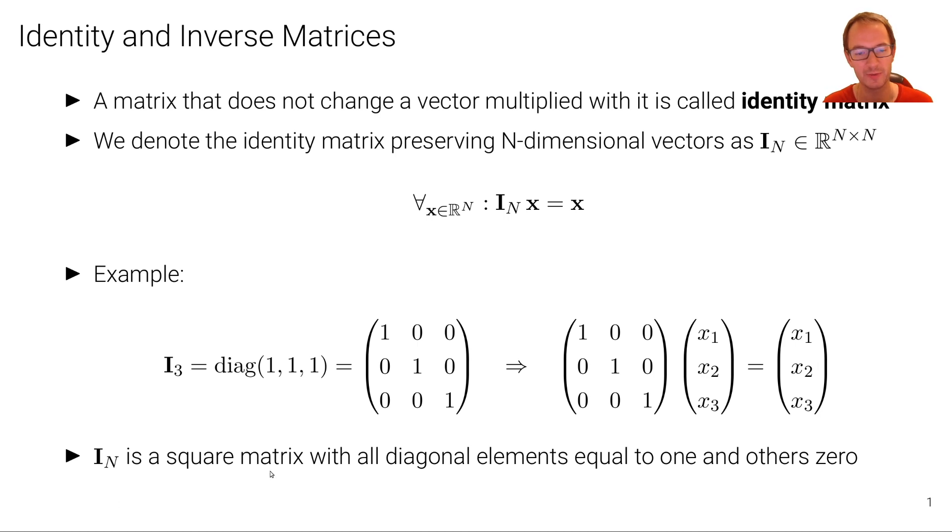So in summary, I_n is a square matrix with all diagonal elements equal to one and others set to zero.